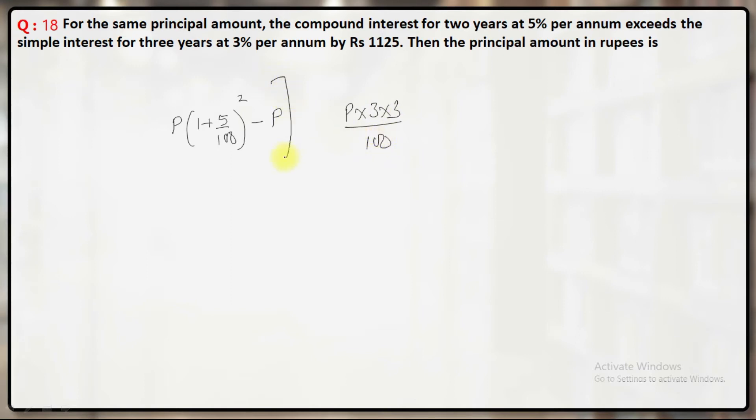The difference of these two interests is given equal to 1125, so it's one equation one variable. When you solve it, what you'll get: 1.05 square, that is 1.1025